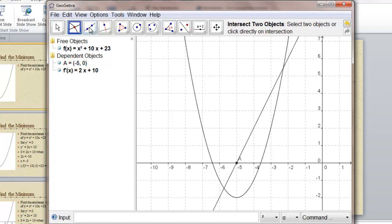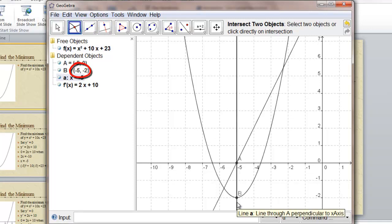So the lowest point. Make a line perpendicular to the x-axis. And where does that intersect f of x? It's at b, which is negative 5, negative 2. That's the lowest point on that curve.